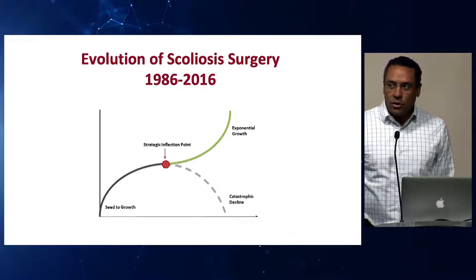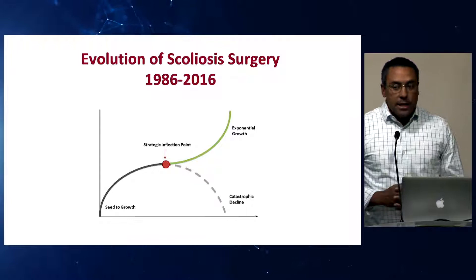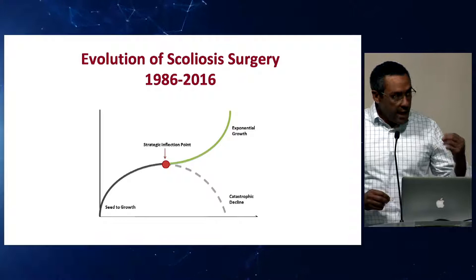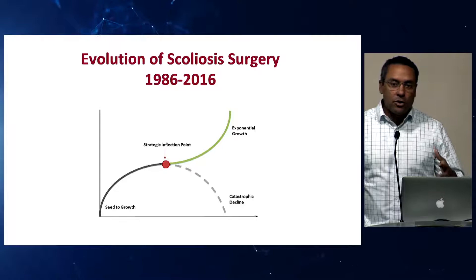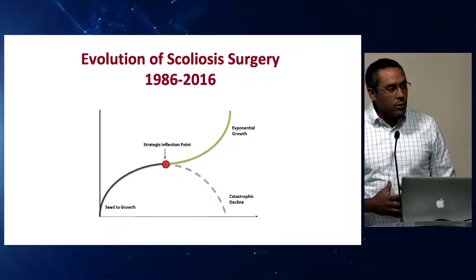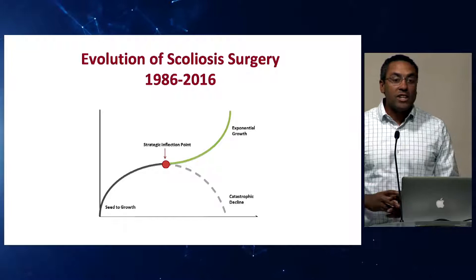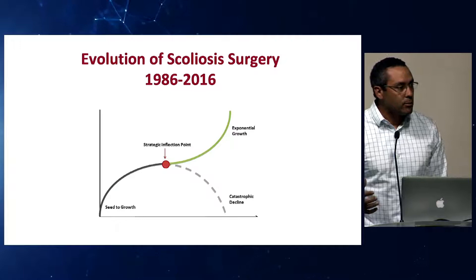MIS procedures are one option inside our armamentarium. When we do a foraminotomy, I say to patients that the challenge is to relieve the pressure on your nerve without substituting one problem for another by weakening your spine through decompression such that your scoliosis gets worse. We follow those people for a year, and it's actually a very small conversion from foraminotomy to something bigger.